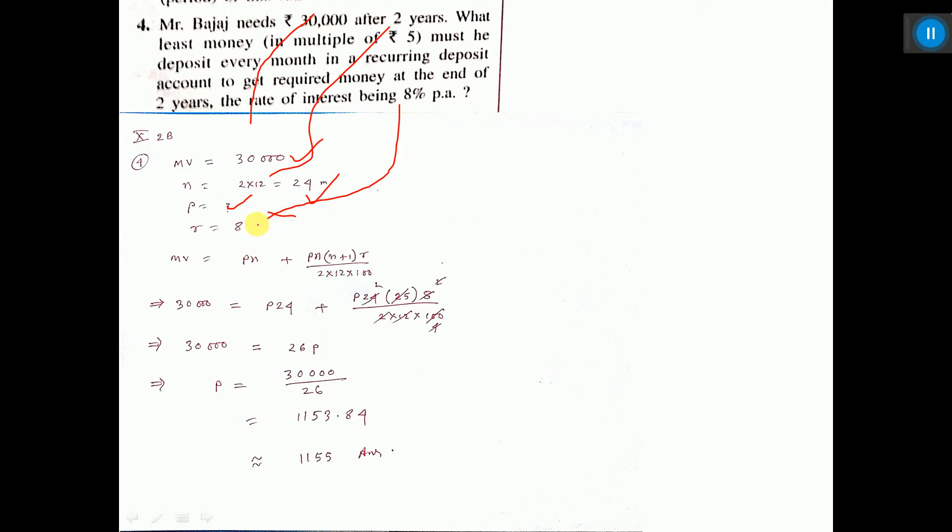We know MV is equal to P×n plus P into n into (n+1) into r by 2 into 12 into 100. Put the value of n as 24, so here 24, 24 plus 1, that is 25, and r is 8.